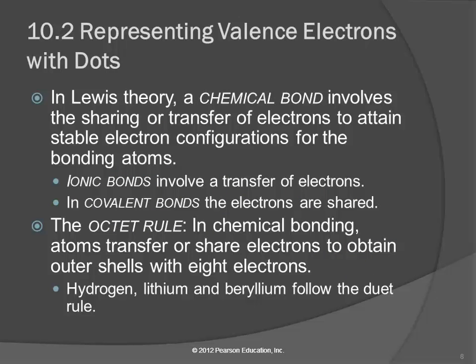Lewis theory is a bonding theory. In Lewis theory, a chemical bond can be made in two different ways: by sharing electrons or by transferring electrons. Ionic bonds involve a transfer of electrons — a metal atom gives up one or more electrons and becomes a positive ion, a nonmetal atom gains one or more electrons and becomes a negative ion, and the positive and negative charges are attracted. That is an ionic bond.